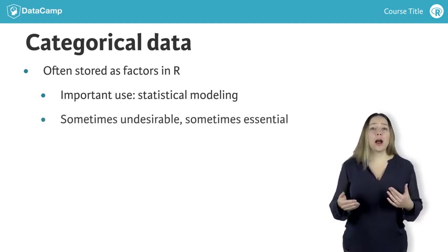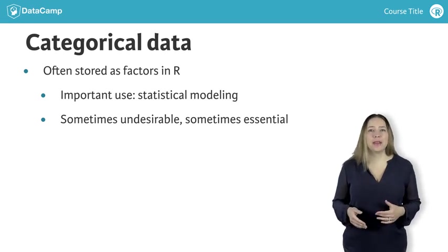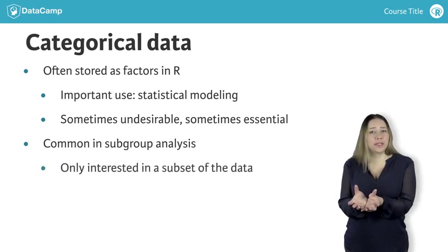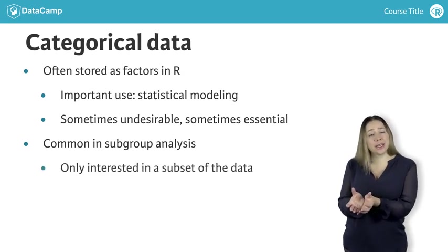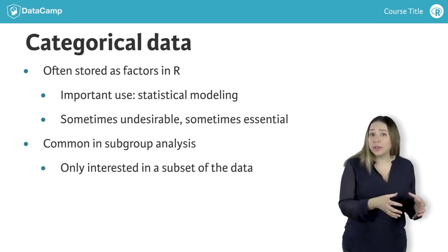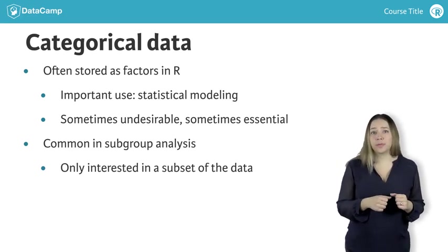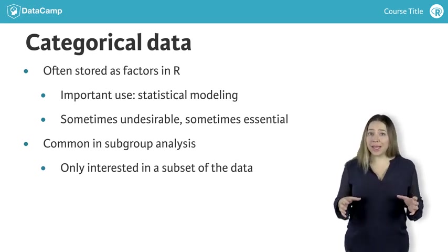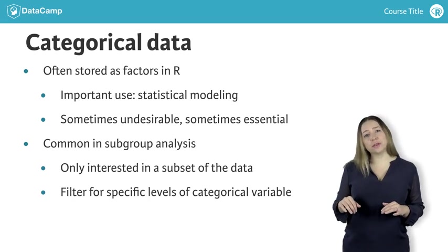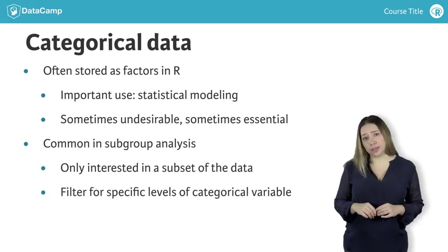A common step in many analyses that involve categorical data is subgroup analysis, where we only work with a subset of the data. For example, analyzing data from students in public schools or only females. We can obtain these subsets by filtering for the specific levels that we're interested in.